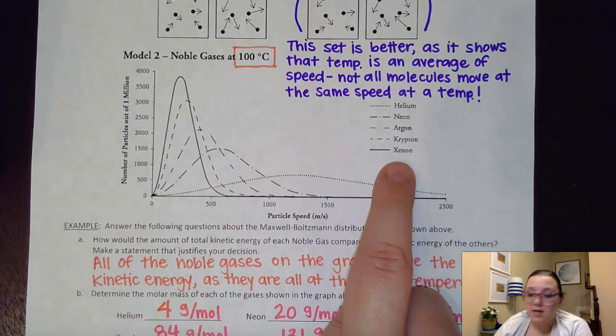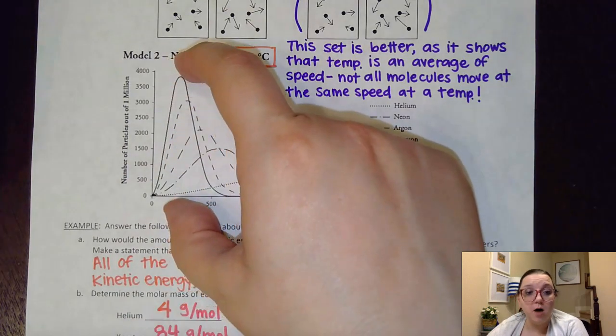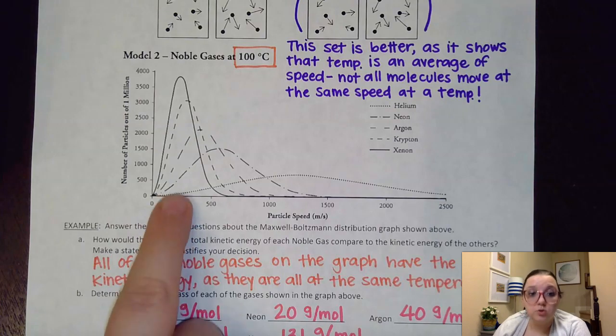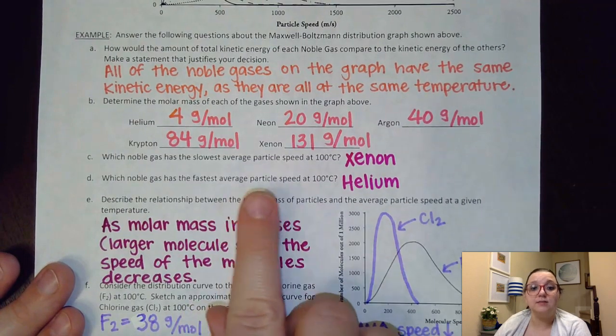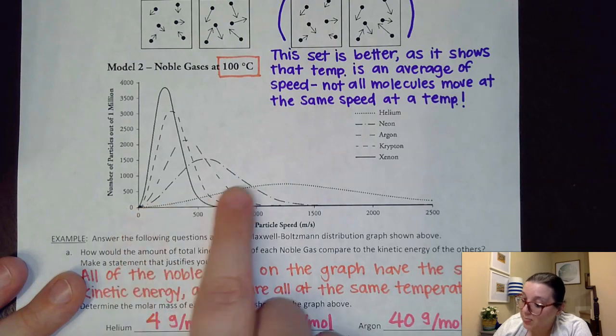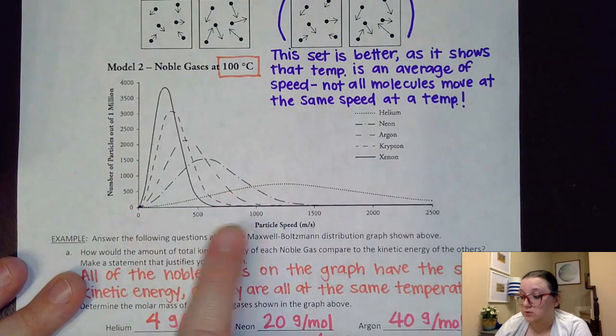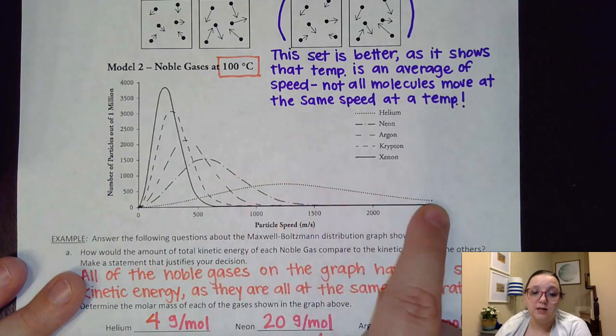which for that would be this solid curve here, which is representative of xenon. Yes, it's taller, but that's because more of my molecules have this reduced speed of their particle. It asks then which noble gas has the fastest average particle speed.